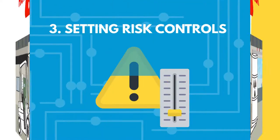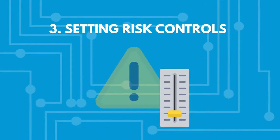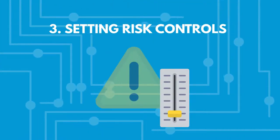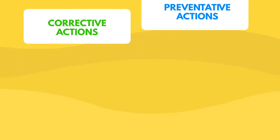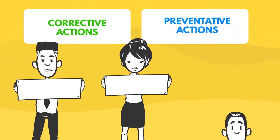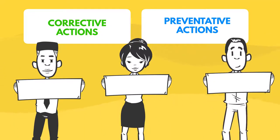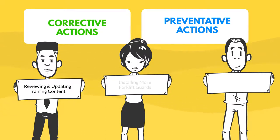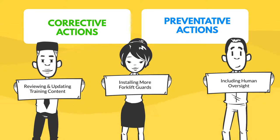And setting risk controls: using corrective actions and preventative actions, managers can easily assign corrective measures such as reviewing and updating the forklift driver training content, installing more forklift guards, and including human oversight when moving more than 500 gallons of toxic chemicals.